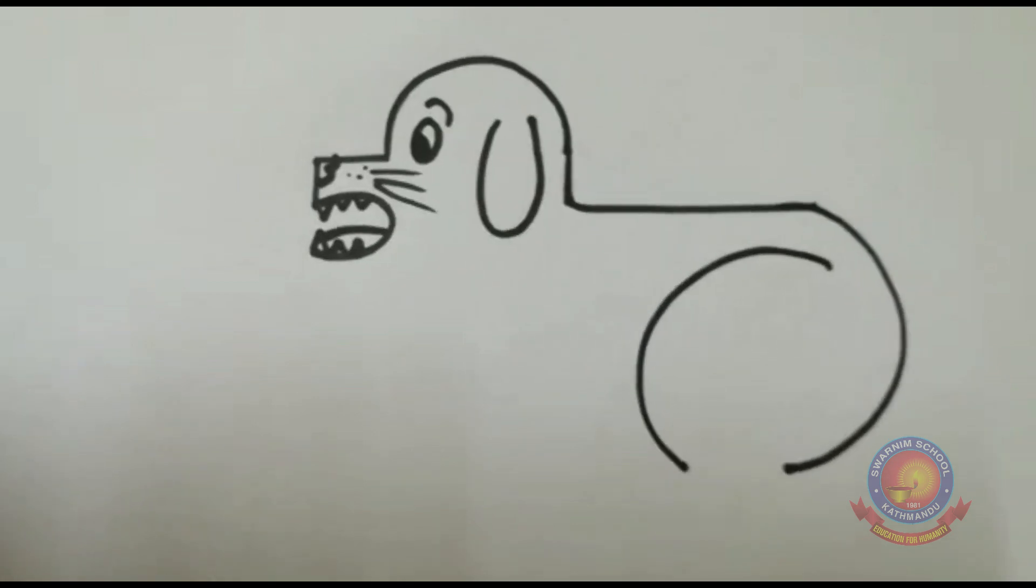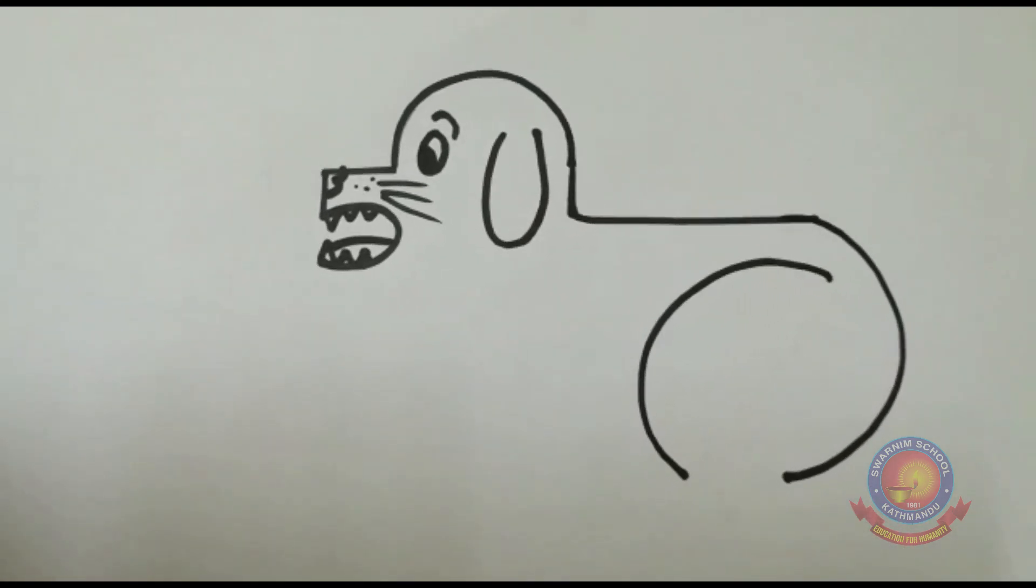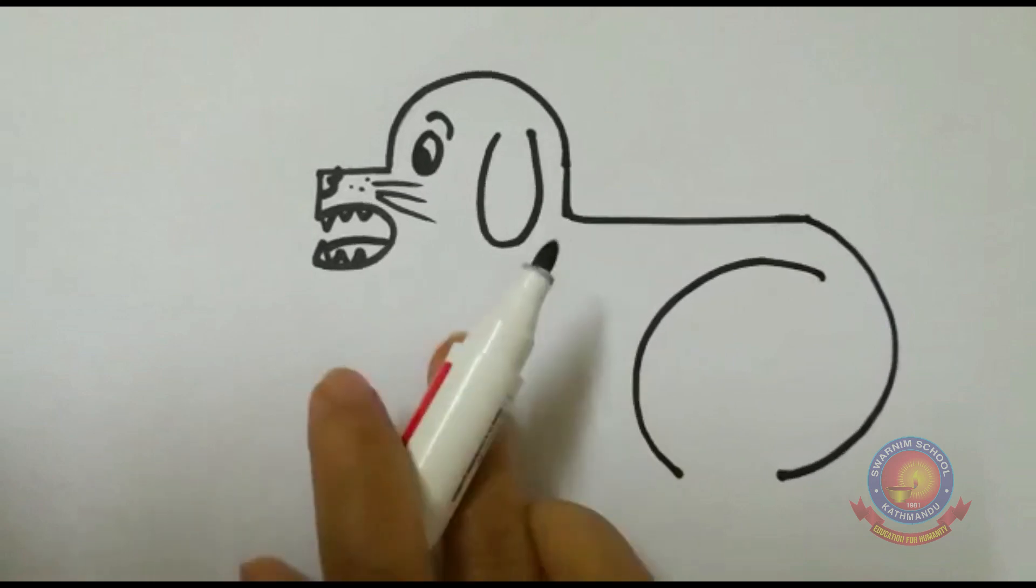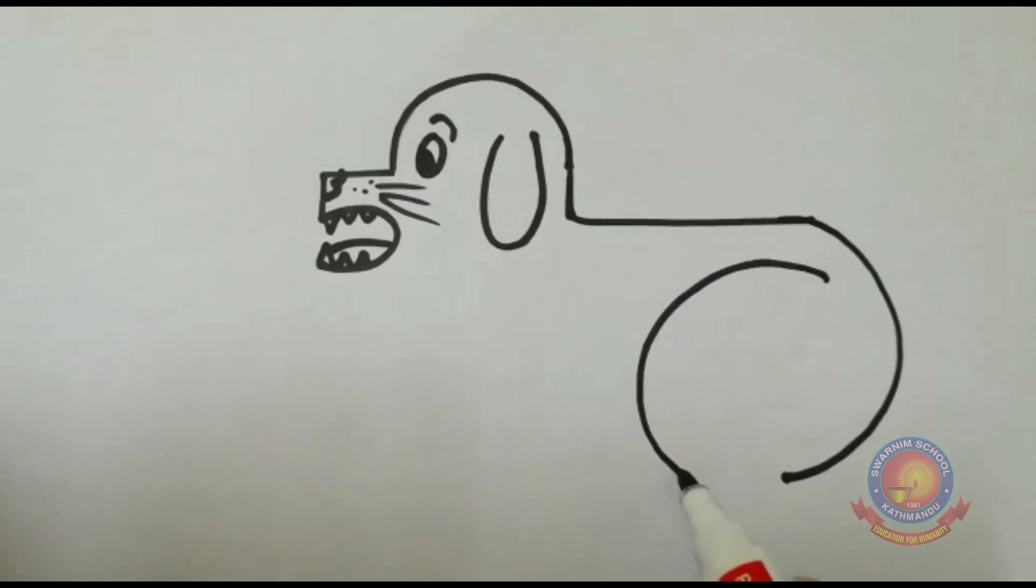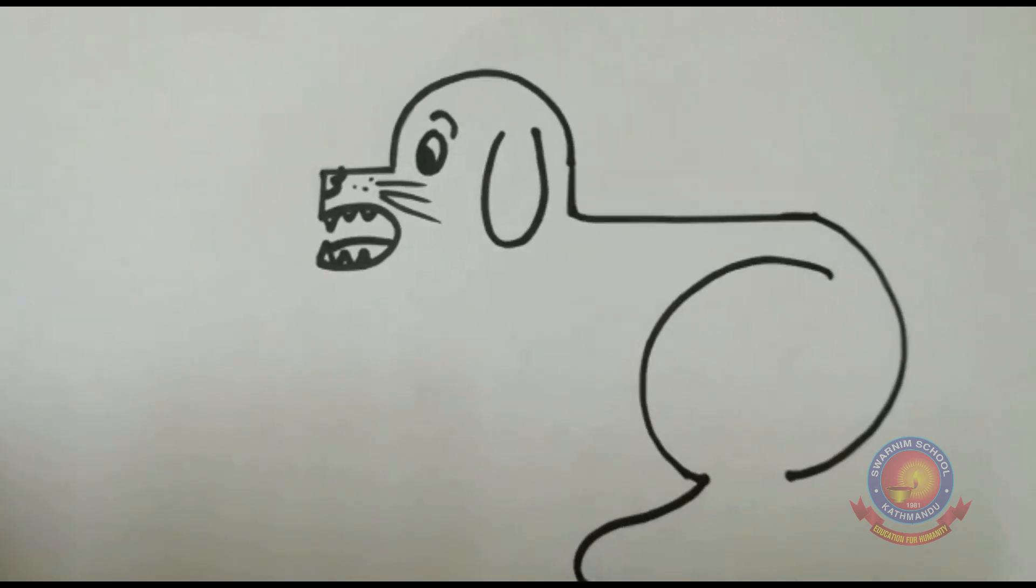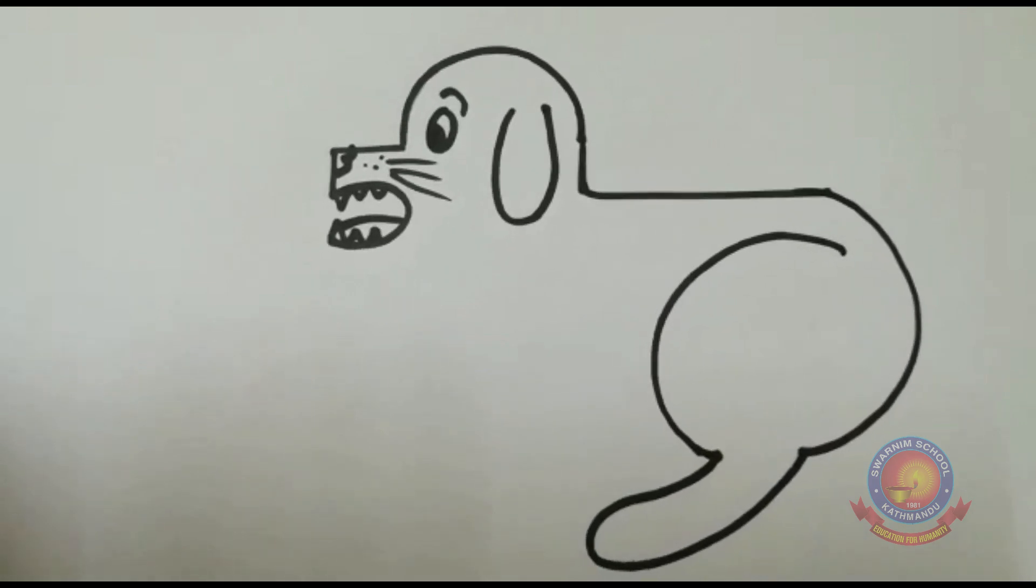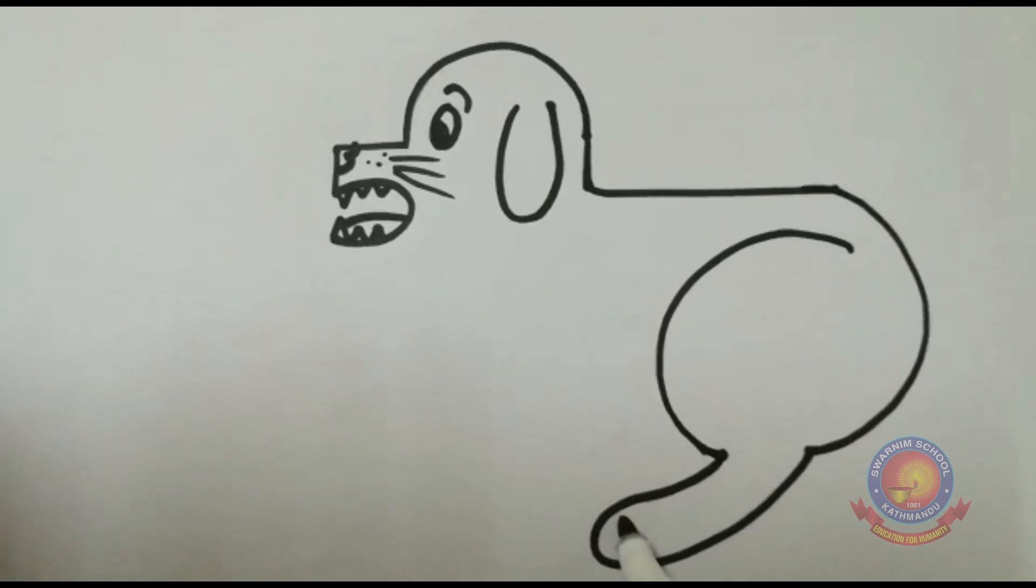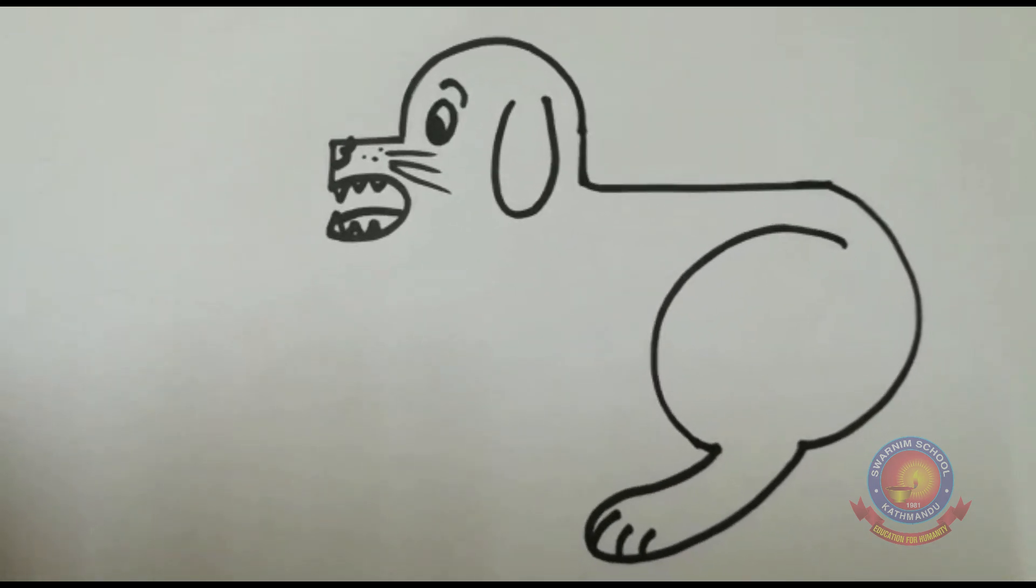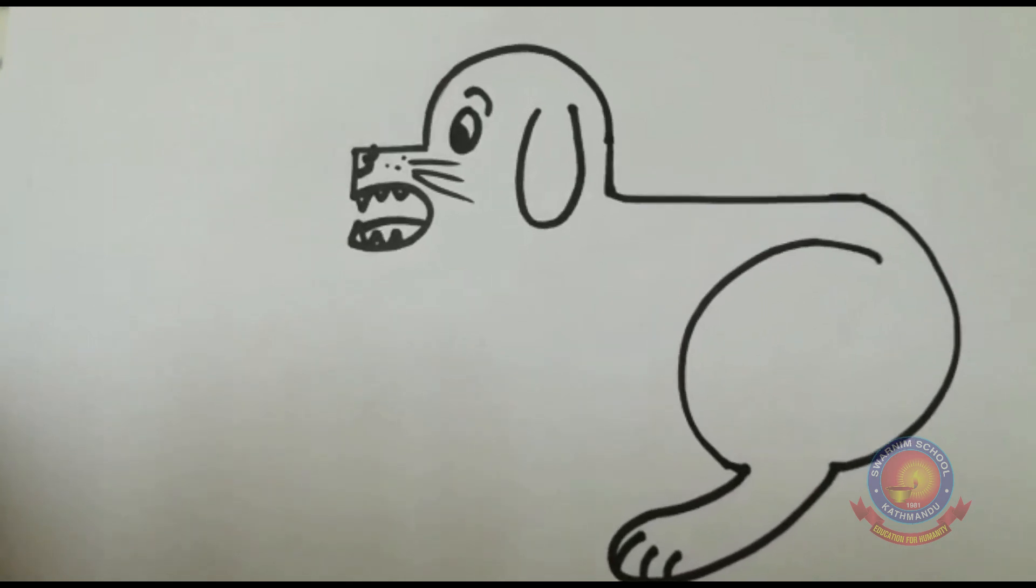After that, from this part, we will write long U for leg of this angry dog. Look here. U. Yes. And make some fingers. Alright. Half is already done.